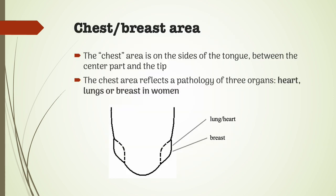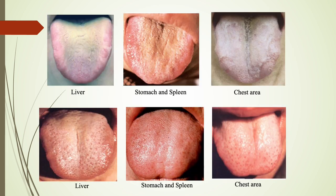The chest area is on the sides of the tongue, between the center part and the tip. The chest area reflects a pathology of three organs: heart, lungs, or breast in women. It is important to differentiate between changes in the sides due to the liver, spleen, or chest.